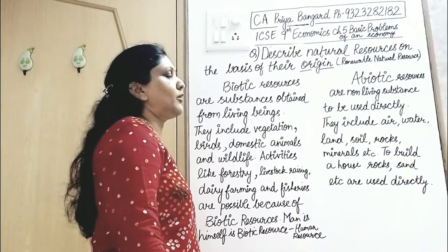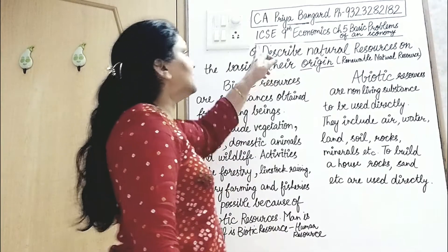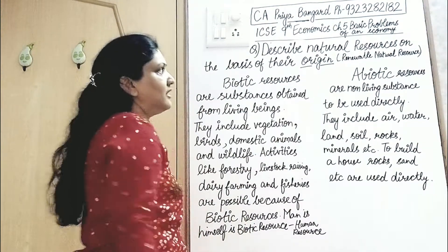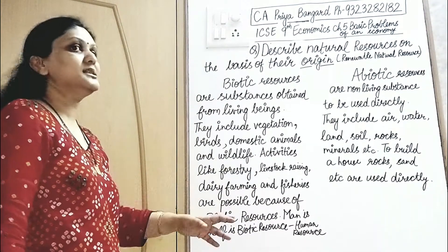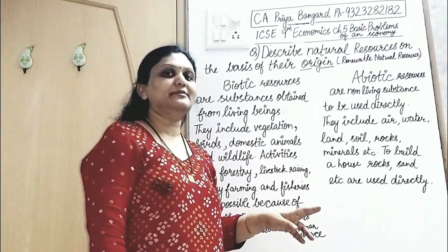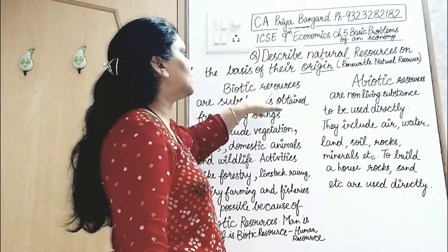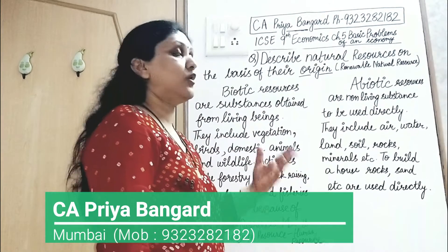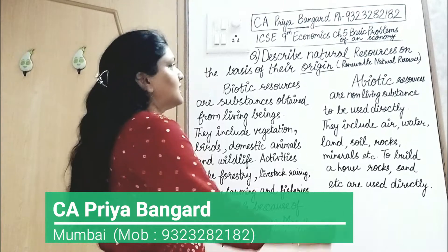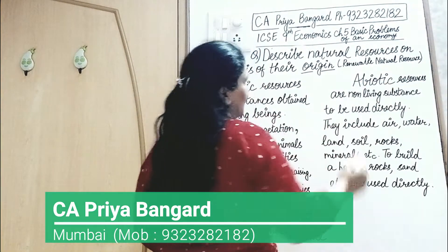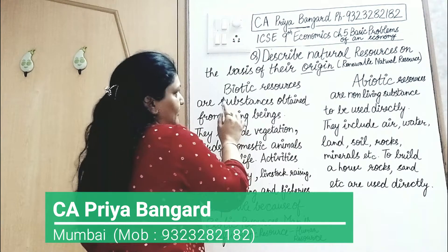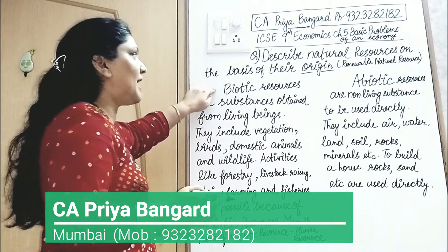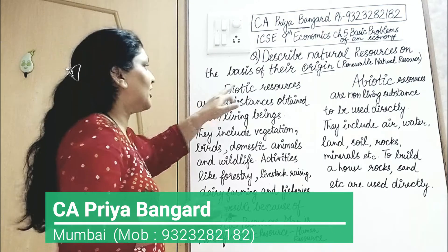5 basic problems of an economy. Describing natural resources on the basis of their origin, there are two types of natural resources: biotic resources and abiotic resources. On the basis of origin, you can also call them renewable natural resources, which are of two types: biotic resources and abiotic resources.